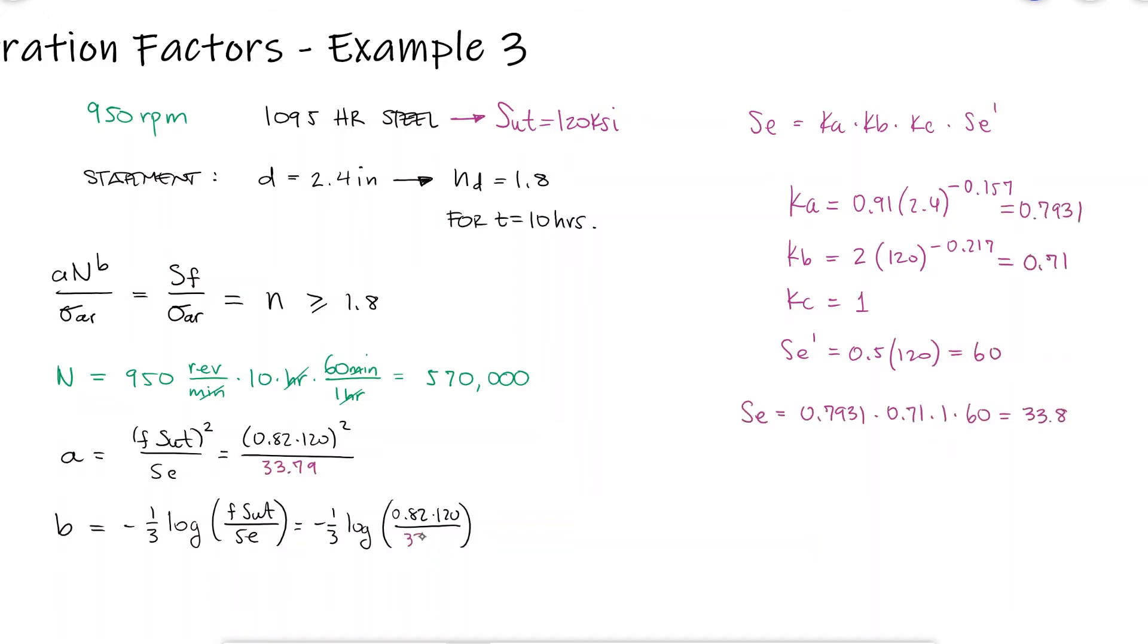and therefore the a coefficient and b exponent, we can find the fatigue strength for 570,000 cycles.